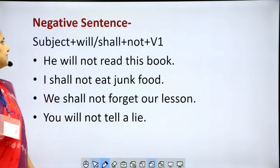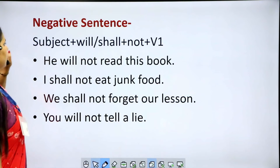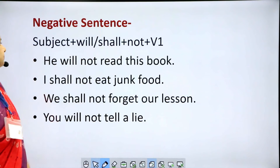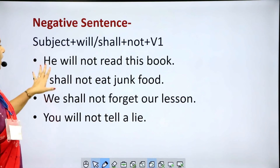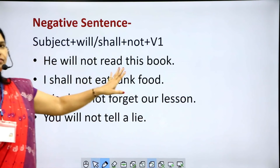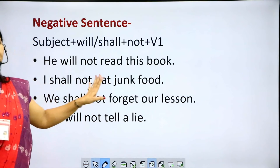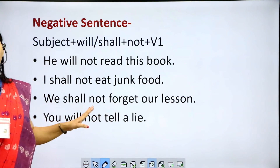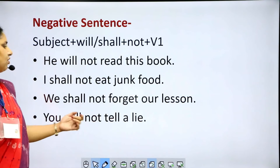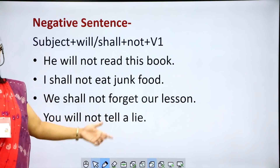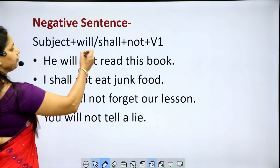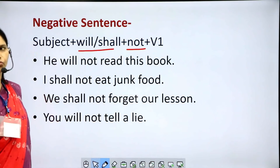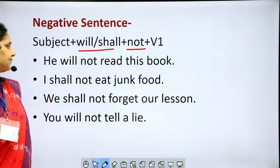Negative sentences in simple future tense: subject plus will/shall plus not plus V1. Examples: 'He will not read this book.' 'I shall not eat junk food.' 'We shall not forget our lesson.' 'You will not tell a lie.' After will or shall, we place 'not' to form a negative sentence.